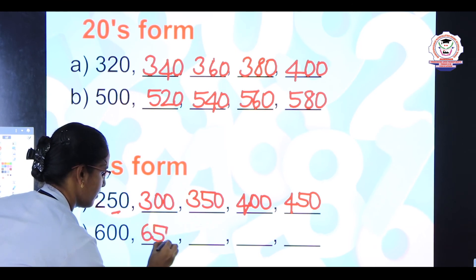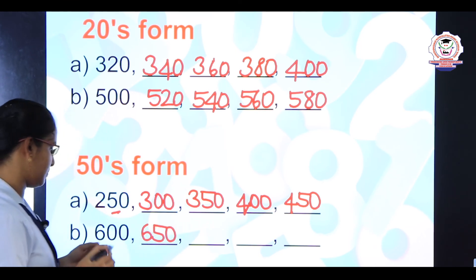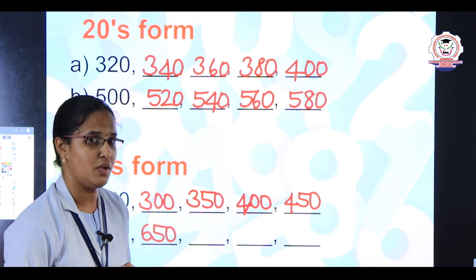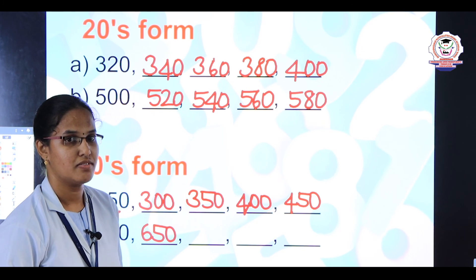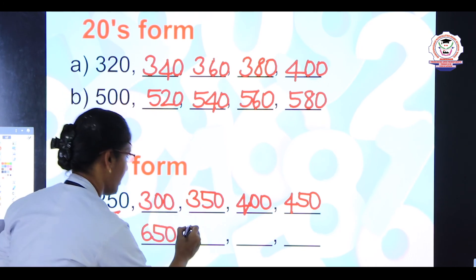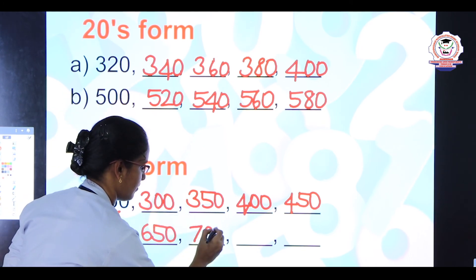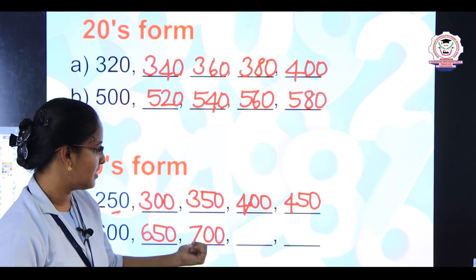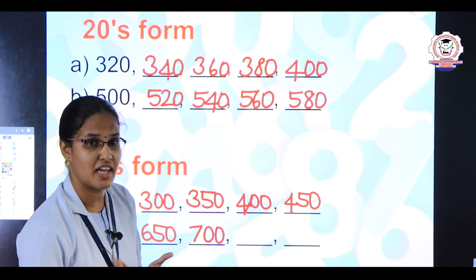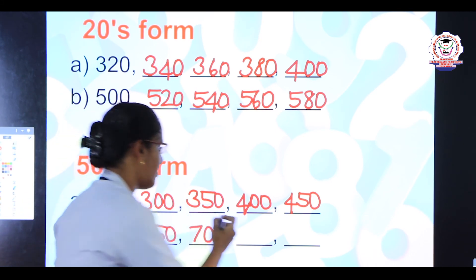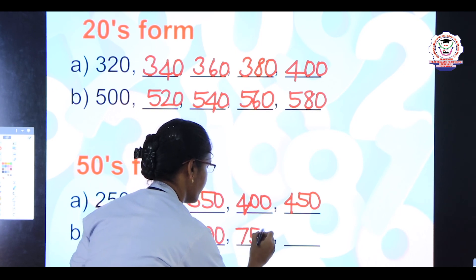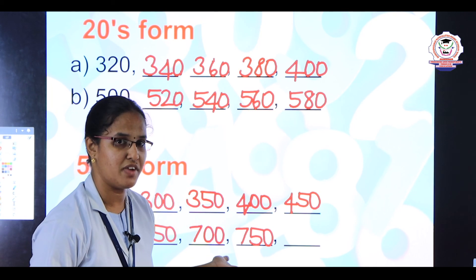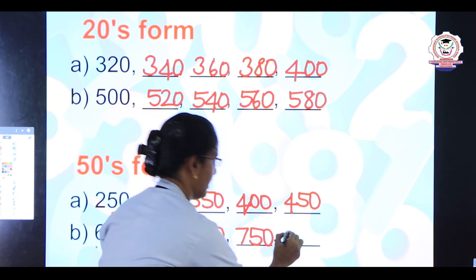Super! My kids are very brilliant. With 650 we have to add 50 again — the answer is 700. Again add 50 with 700 — the answer is 750. And the last one: add 50 again — the answer is 800. Very good!